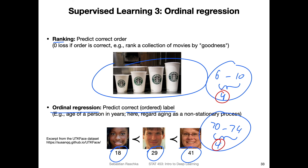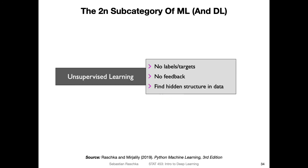In this class, we won't talk about ordinal regression much — we will mostly be focused on classification for supervised learning. I just wanted to cover this for completeness, because the three categories of supervised learning are really classification, regression, and ordinal regression. In the next video, I will talk more about unsupervised learning and also briefly about reinforcement learning.